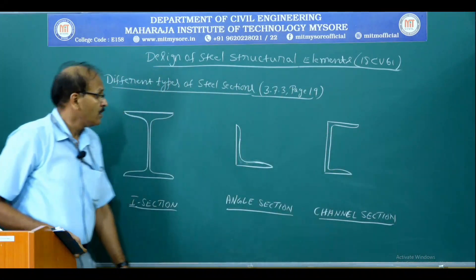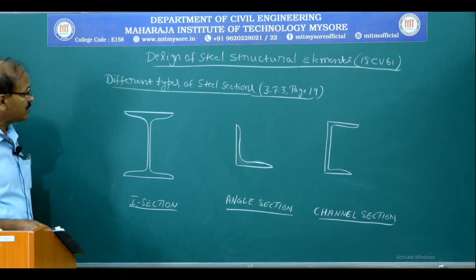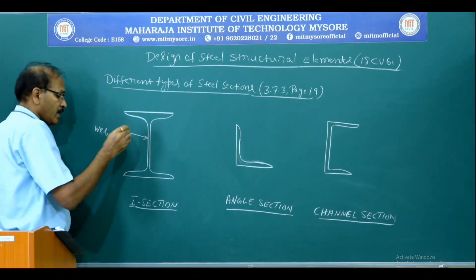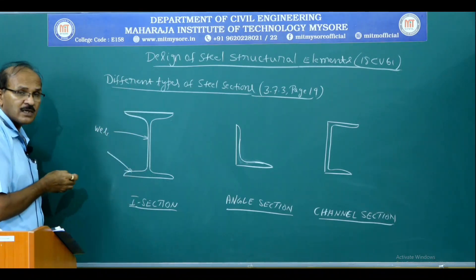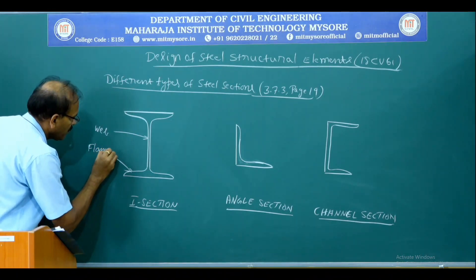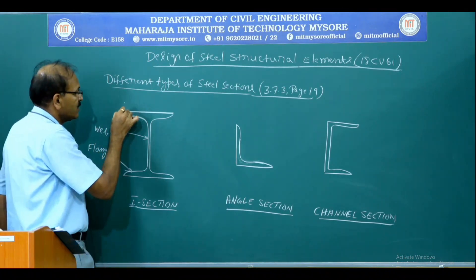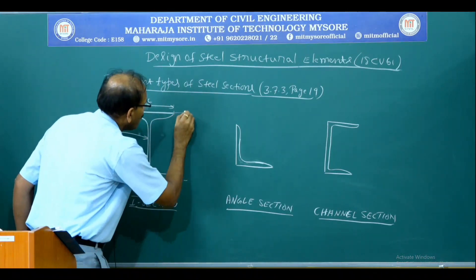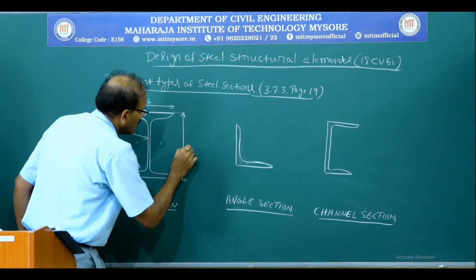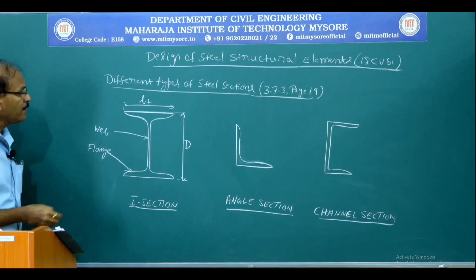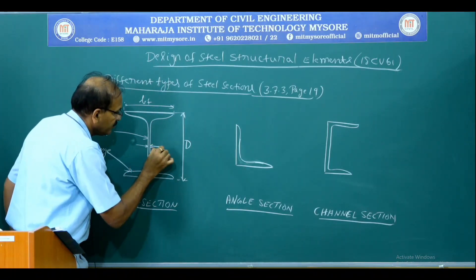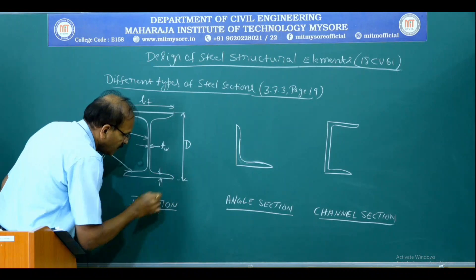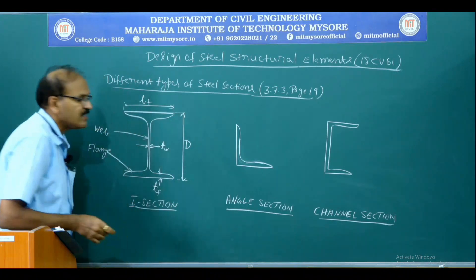This is a channel section. It has several components — this part is called the web portion, and this component is called the flange portion. This is the width of the flange, and this is the overall depth of the section, represented as capital D. This is the thickness of the web, TW, and this is the thickness of the flange, represented by TF.